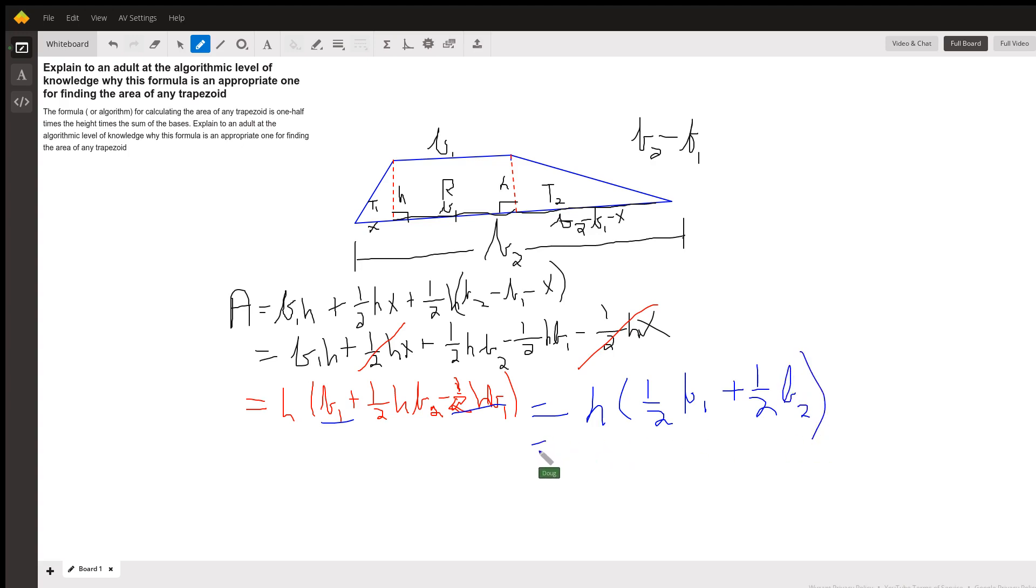And now I can factor out the one-half and I get one-half H times B sub 1 plus B sub 2. And you can think of that as the height times the average of the two bases. There you go. Hope that helped. Have any questions? Post a comment.